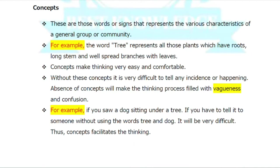Next comes concepts. These are those words or signs that represent the various characteristics of a general group or community. For example, the word 'tree' represents all those plants which have roots, a long stem, and well-spread branches with leaves — all grouped under the single name and symbol 'tree'.